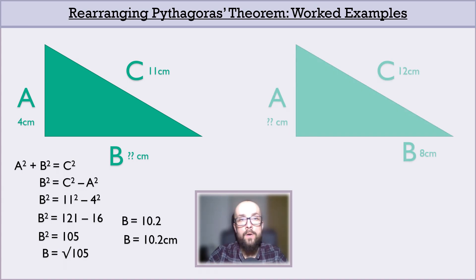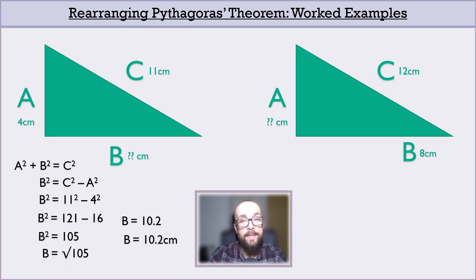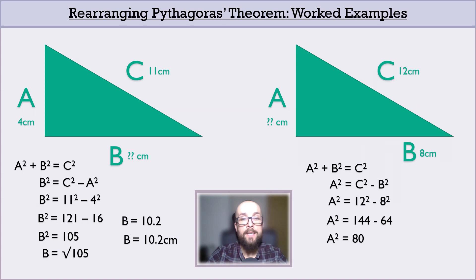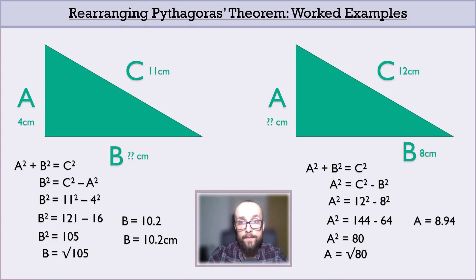In the next example, C is 12 centimetres and B is 8 centimetres, and we need to find A to three significant figures. Starting with our equation, rearranged by subtracting B squared from each side, we substitute in known values and resolve their squares: A squared equals 144 minus 64, which comes out to be 80. To get to A, we square root 80, which the calculator tells me is 8.94 to three significant figures. So A equals 8.94 centimetres.